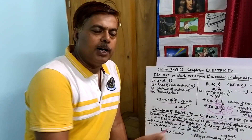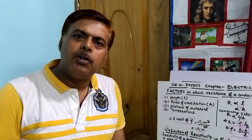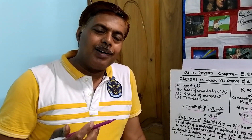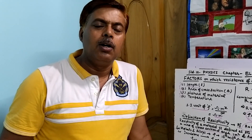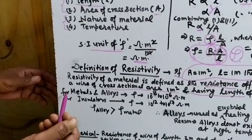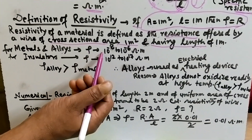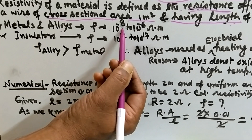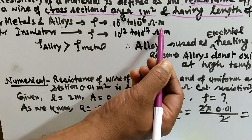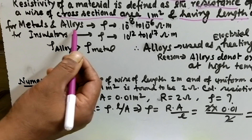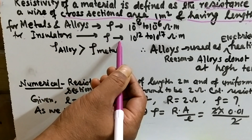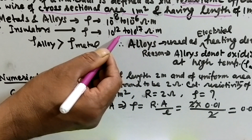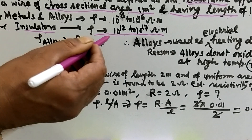By the given formula we can define resistivity. Now something more about resistivity: certain materials have different resistivity — alloys, conductors, insulators. The range of resistivity for metals and alloys is of the order 10 to the power minus 8 ohm meter to 10 to the power minus 6 ohm meter. For insulators, resistivity is of the order 10 to the power 10 or 10 to the power 12, up to 10 to the power 17 ohm meter.